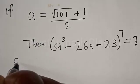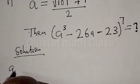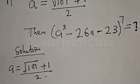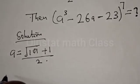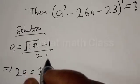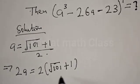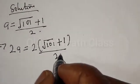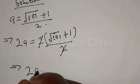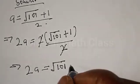Solution. We have a to be equal to square root of 101 plus 1 over 2. Now, let's multiply both sides by 2. This implies that 2a will be equal to 2 into square root of 101 plus 1 over 2. These twos will cancel, so 2a will be equal to square root of 101 plus 1.